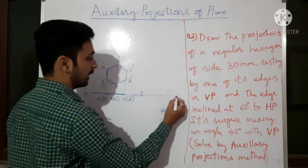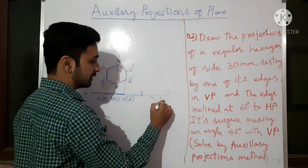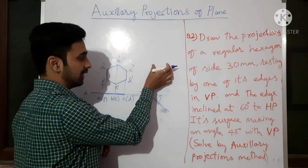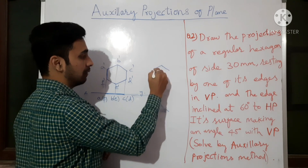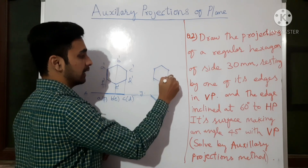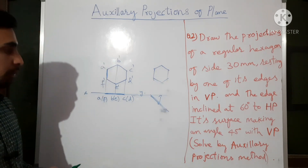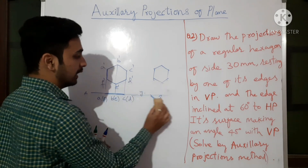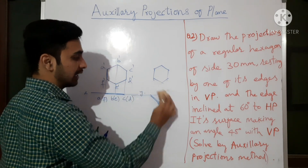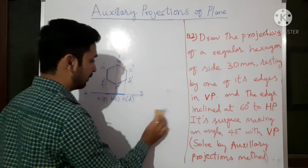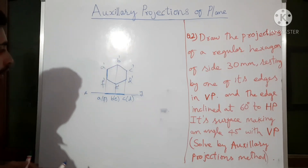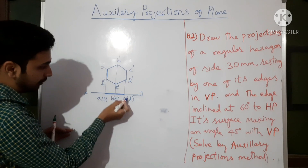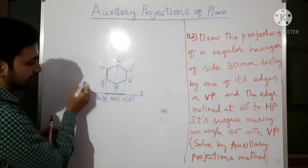Normally we would restore the surface angle to 45 degrees by redrawing the line at 45 degrees and projecting all points to get a reduced hexagon. But in the auxiliary method, instead of rotating the object, we rotate the XY line.